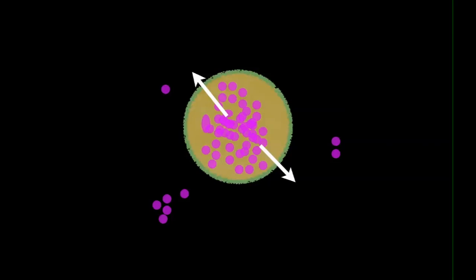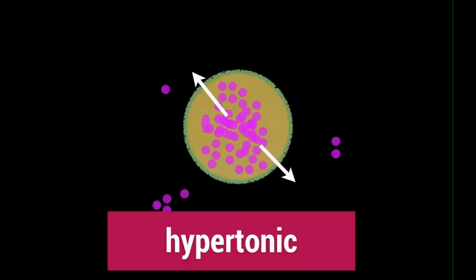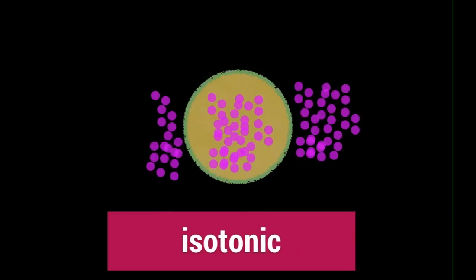However, sometimes there are more inside than outside, and in that case it's called hypertonic, because things want to get out of the cell. And then there is the one where there is the same amount of solutes inside and outside, and that is known as isotonic.